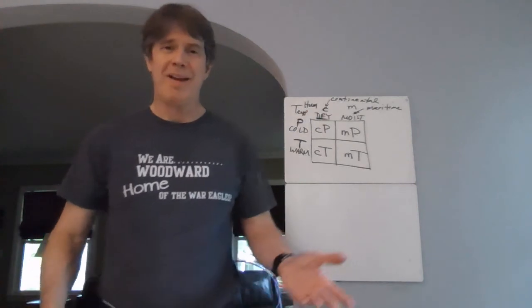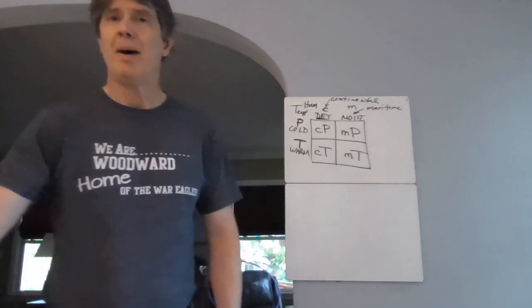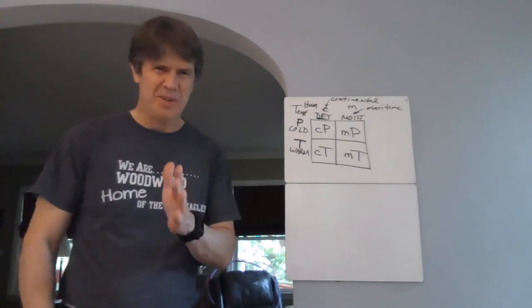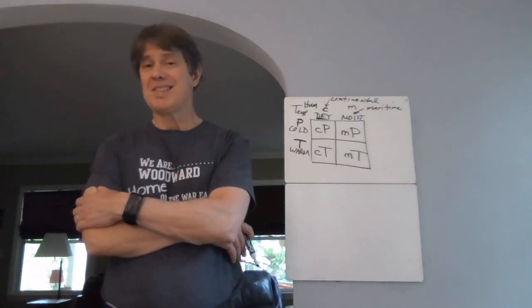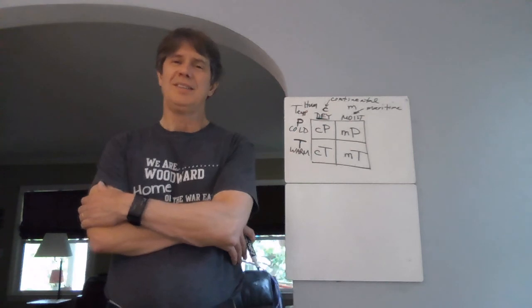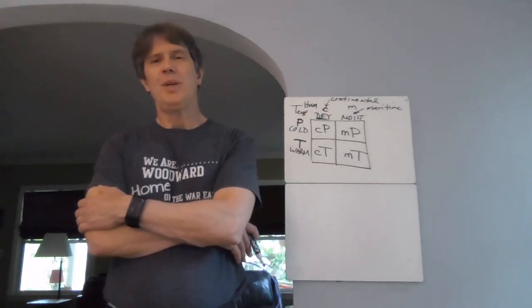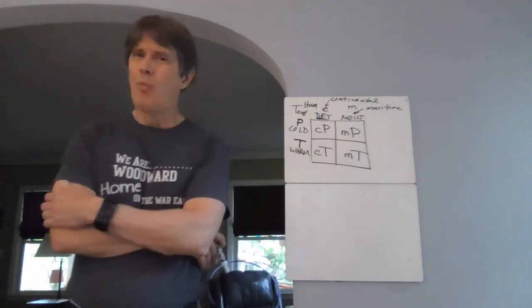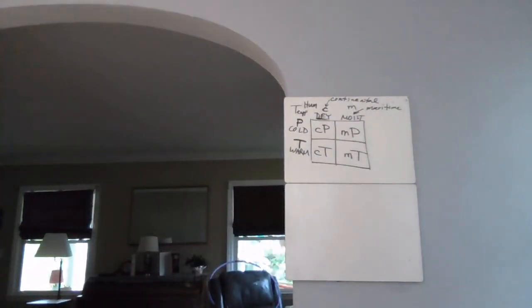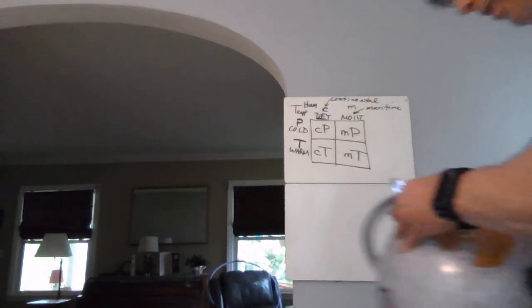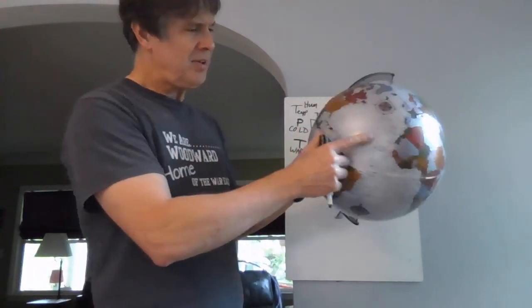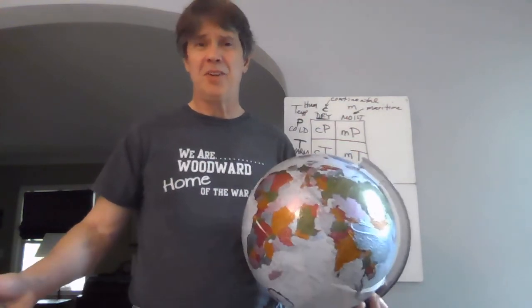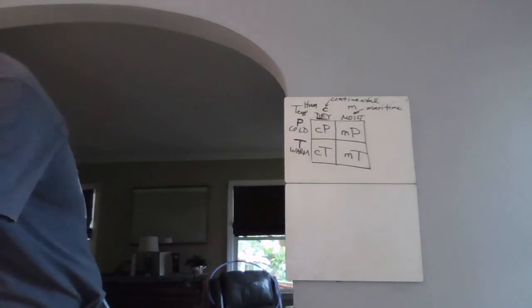There are a couple of additional air masses worth mentioning. One is equatorial air masses, labeled 'E,' but we don't really talk about them because they never come here. Why? Because they lie in the Intertropical Convergence Zone — air is always converging on the equator and doesn't leave. It's a convergence zone, so equatorial air doesn't travel to us.